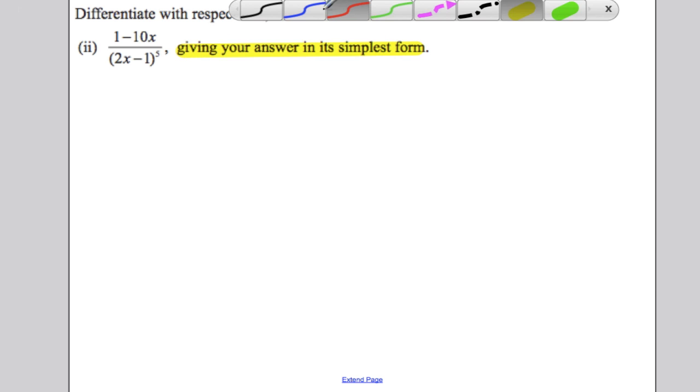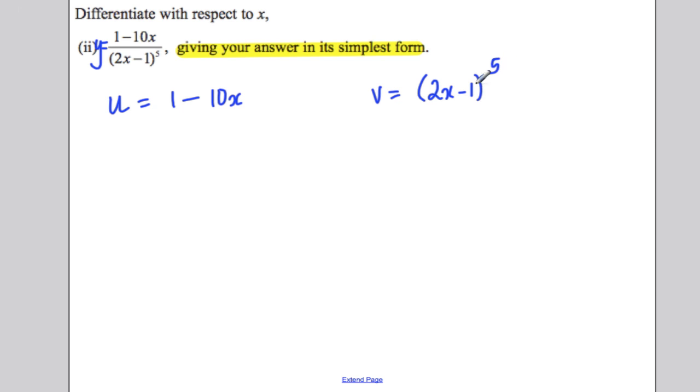Now, this is a quotient. It is a fraction. So state your u and your v. Firstly, let that be y equals. State your u: u is 1 subtract 10x. Your v is (2x - 1) to the power of 5.